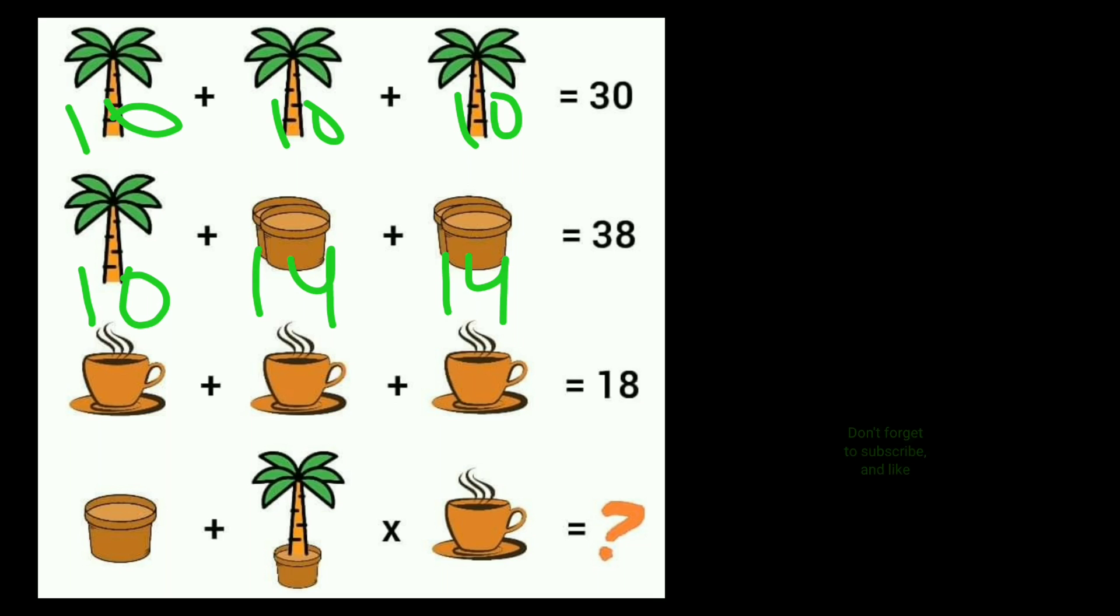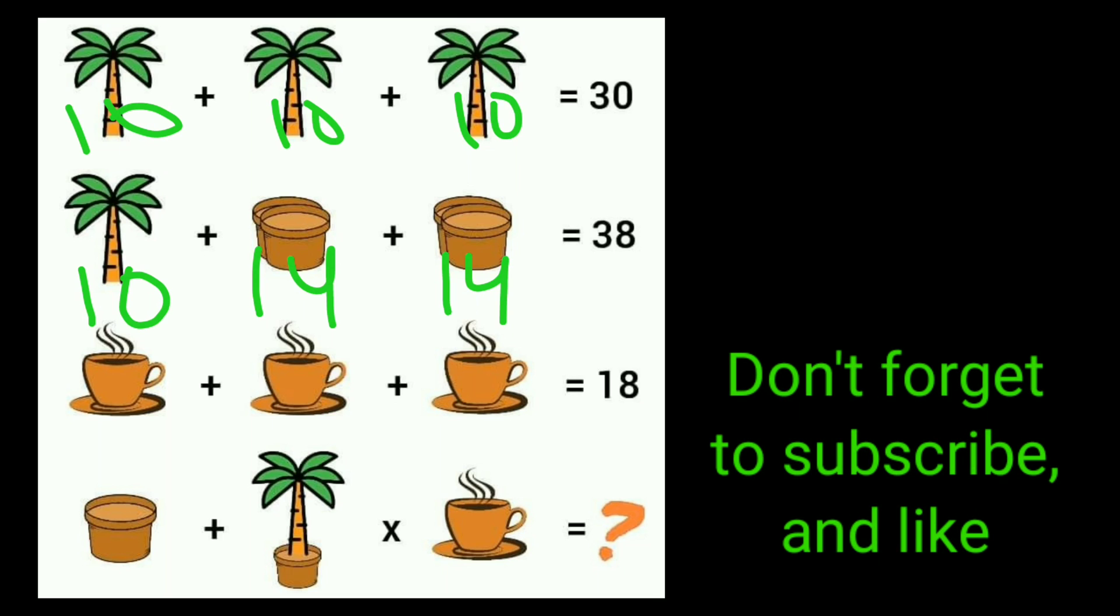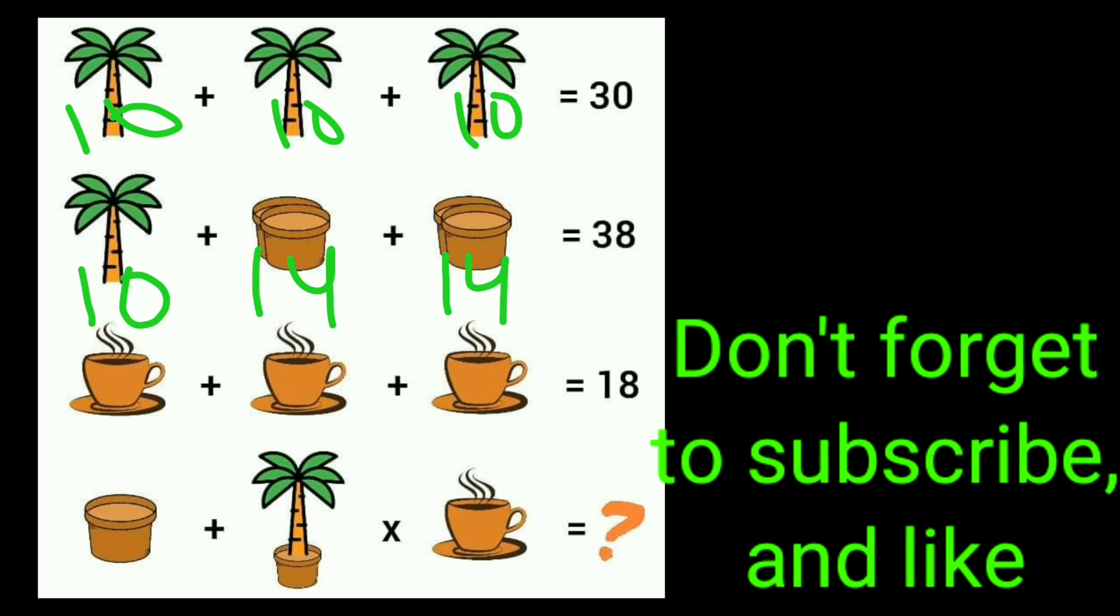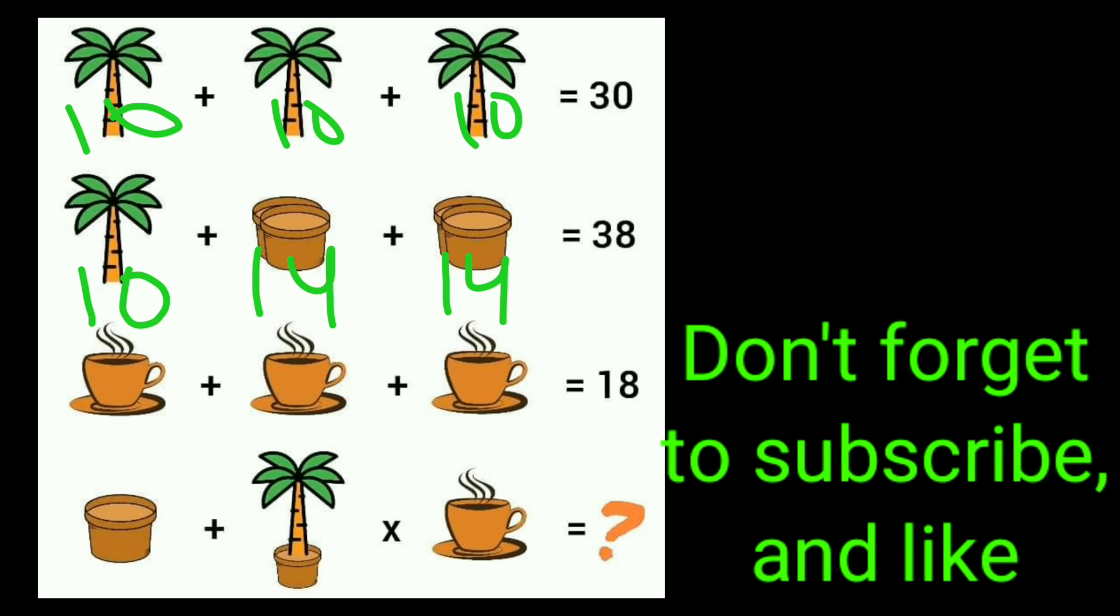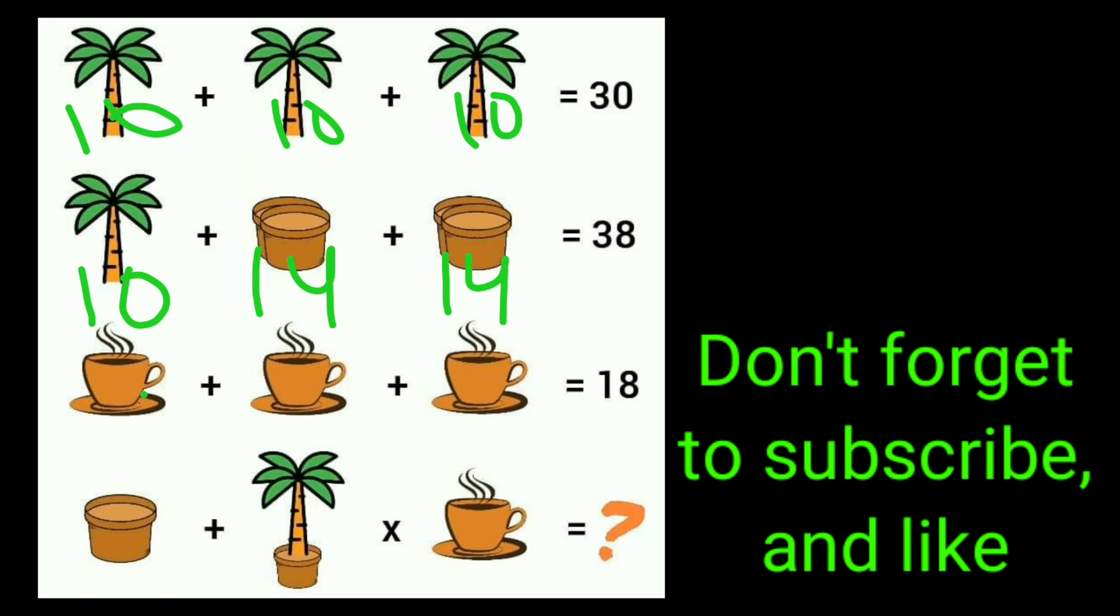Now look at equation 3. Three tea cups are here. Tea sets which equal 18. It means the value of one tea set is 6, 6, and 6. Six plus 6 plus 6 equals 18. Now we know that the value of the tree is 10. One flower pot is 7. In equation 2, two flower pots are there. The value of two flower pots is 14, so the value of one flower pot is 7. The value of the tree is 10 and the value of the tea set is 6.